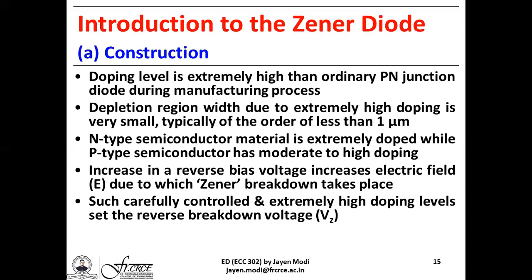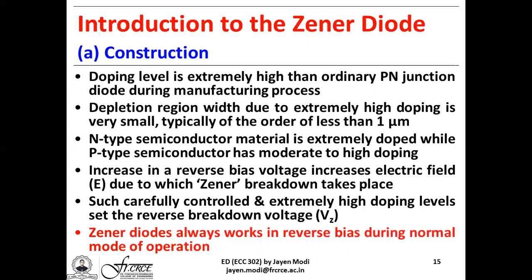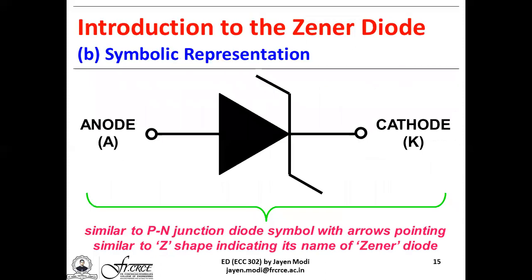Such carefully controlled and extremely high doping levels allow the reverse breakdown voltage VZ to be set — meaning you can control the voltage at which Zener breakdown takes place. Zener diodes always work in the reverse bias mode during normal operation, unlike ordinary PN junction diodes which always work in forward bias. The symbol for the Zener diode is similar to a PN junction diode but with arrows pointing in a Z-shape, indicating it is a Zener diode.